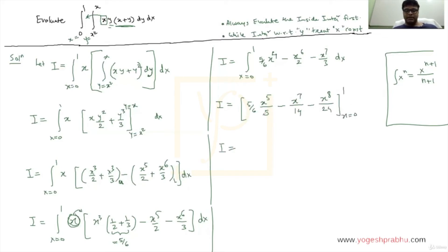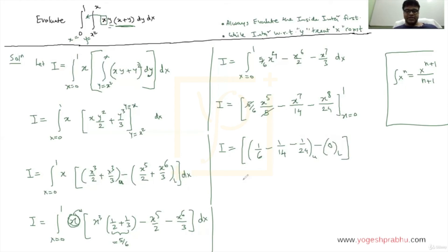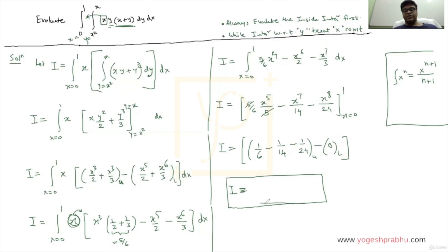Substituting the upper limit x equals 1 gives: 1/6 minus 1/14 minus 1/24. For the lower limit x equals 0, all terms become 0. So the final answer of I is 1/6 minus 1/14 minus 1/24. I hope you followed the bigger picture — the more important things, which is how to deal with double integration. That is what I tried to explain in this problem.